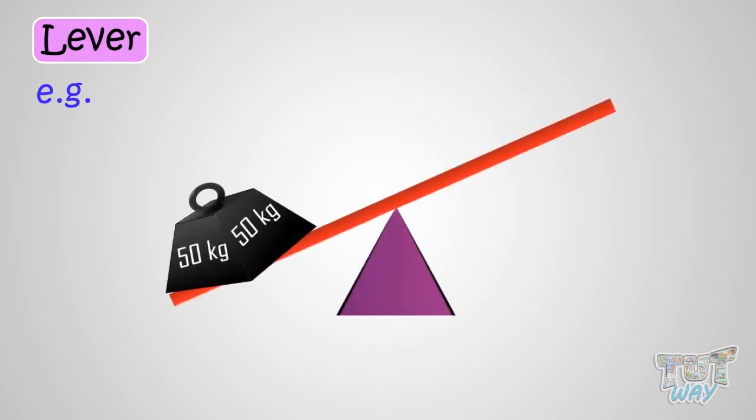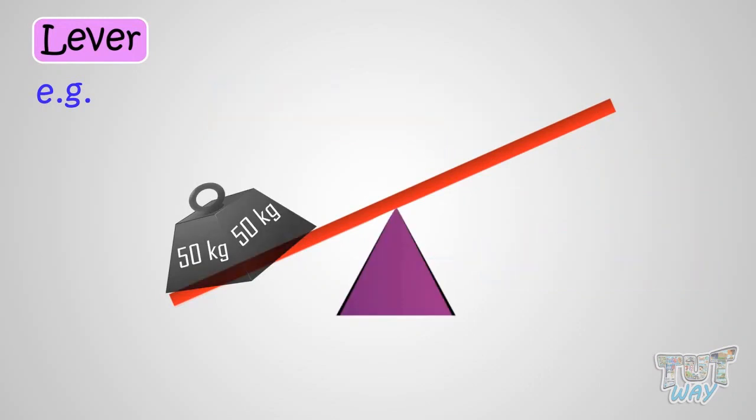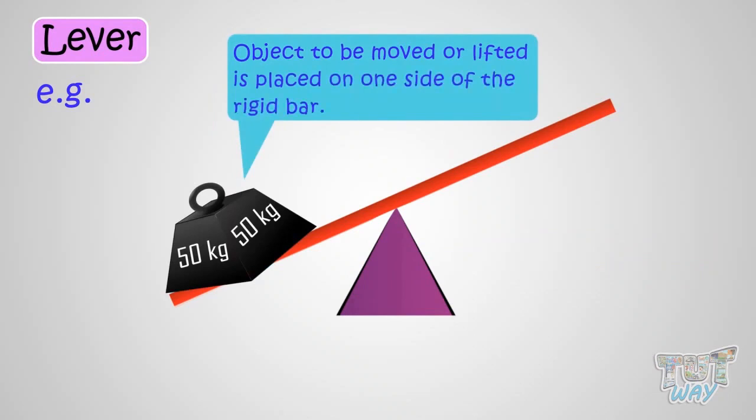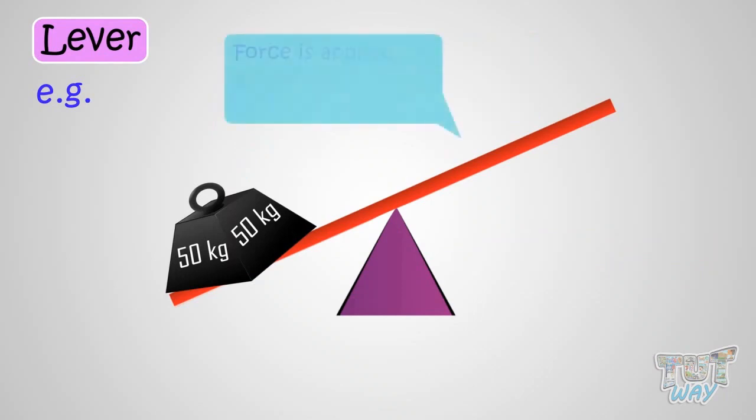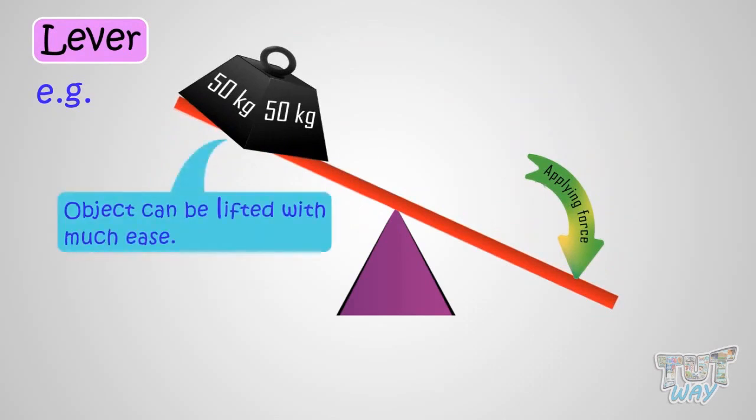Now let's see what is this lever. A lever is nothing but a rigid bar that moves around a support, and that support is known as fulcrum. The object to be moved or lifted up is placed on one side of the rigid bar, and force is applied on the other side of the bar to lift it. This way, object can be lifted with much ease compared to lifting the object using muscular force.